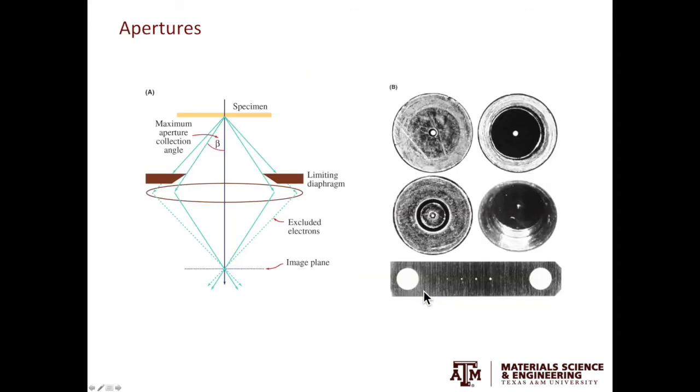Moving from lenses to apertures, apertures are much easier. These are just small holes in diaphragms. The aim of having apertures is to limit the angular spread of electrons entering the lens. In the example here, the electrons with scattering semi-angle less than beta will go through the lens, but the electrons with scattering semi-angle greater than beta will be blocked by the aperture.